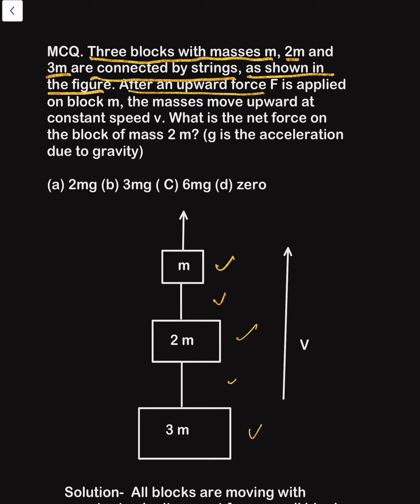The masses move upward at constant speed V. If speed V is constant, then what about acceleration? That is zero. Because acceleration is change in velocity. Velocity is constant, so change in velocity is constant, then acceleration is zero.